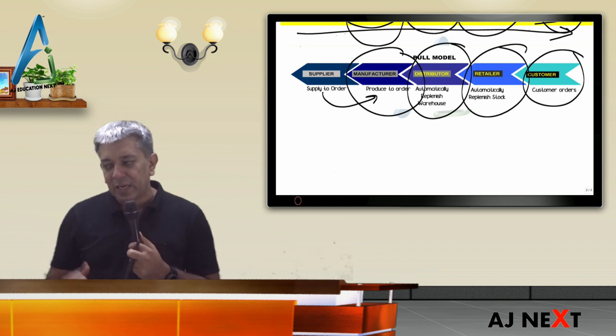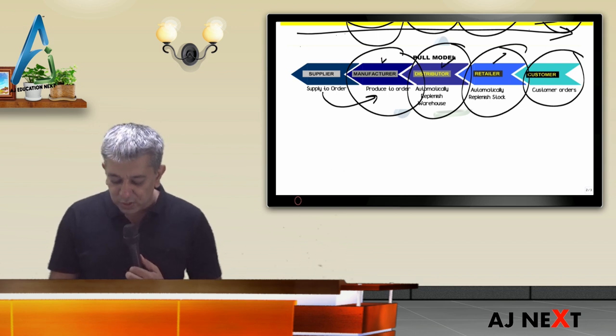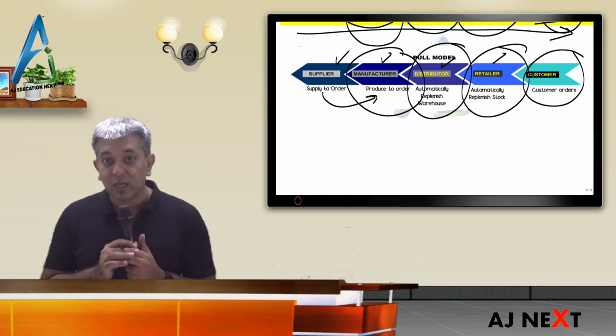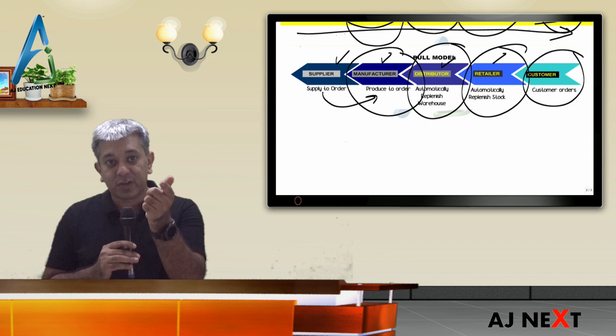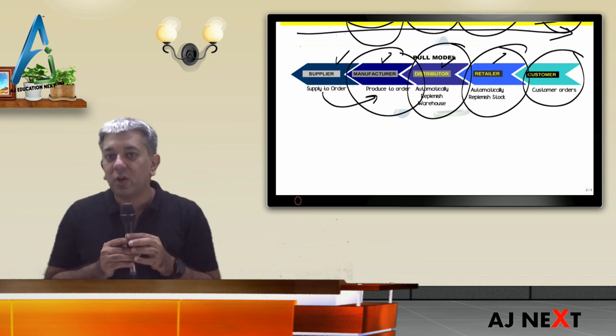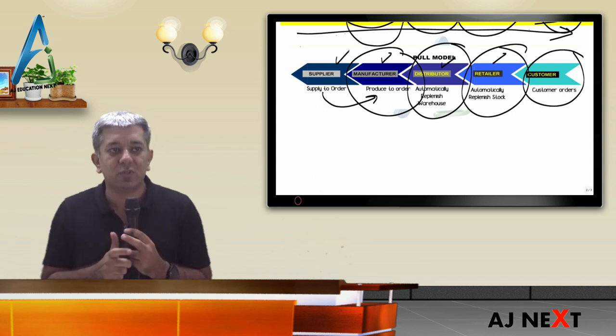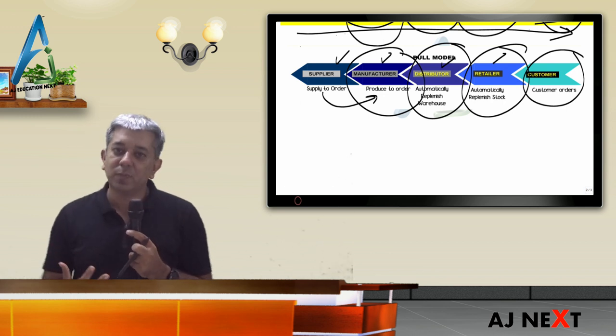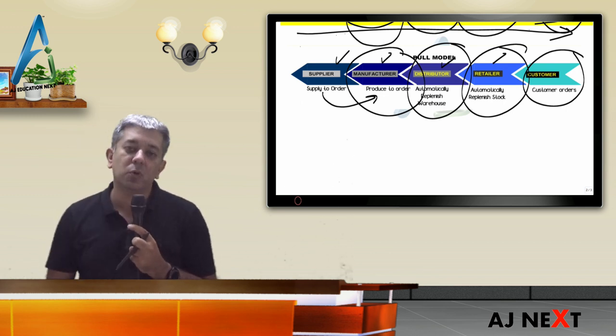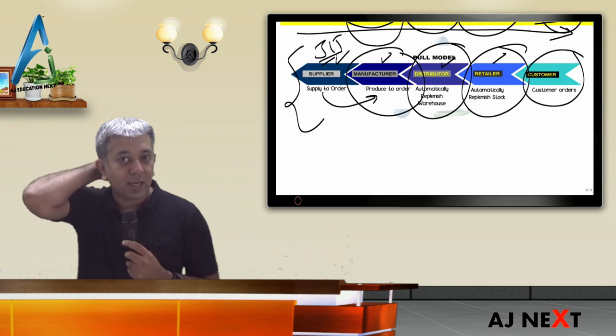There were a lot of negative things in push system because stock required was much more. Then we thought, can we do something else? And hence, due to the need of the hour, came the pull system. Pull system: customer places an order, that order goes to retailer, retailer gives order to distributor, distributor starts making goods based on orders.